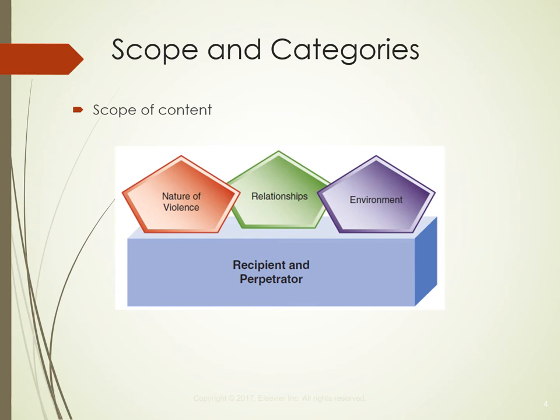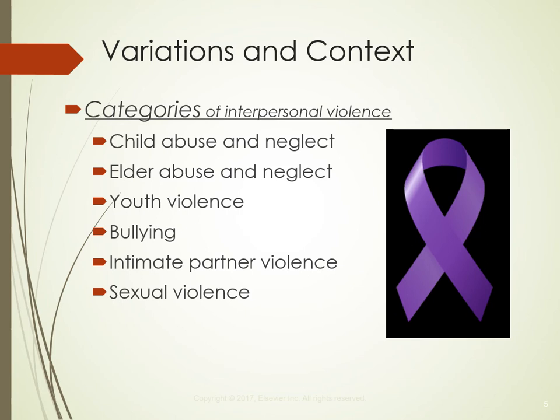There are many categories of interpersonal violence that can happen throughout the lifespan, and they may include child abuse and neglect, bullying, youth violence, intimate partner violence, and elderly abuse and neglect. We'll discuss these different categories and look into special categories that are at increased risk, starting with the question: which children are at greater risk for abuse and neglect?